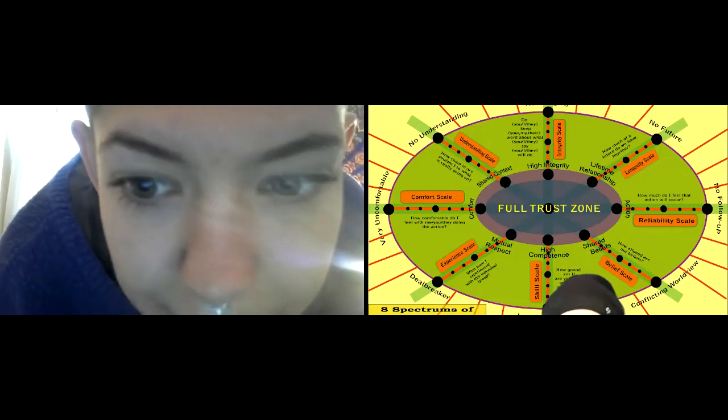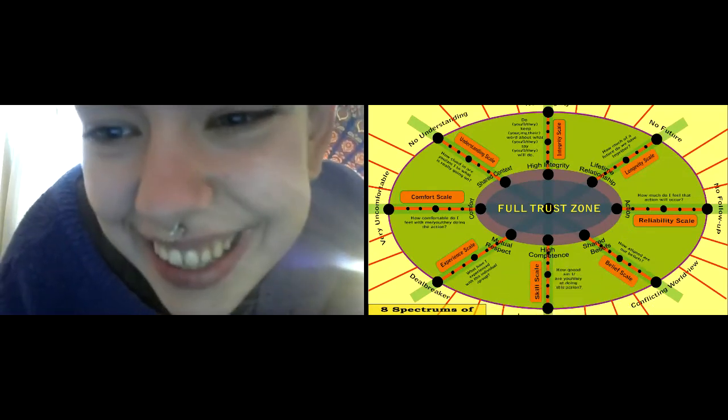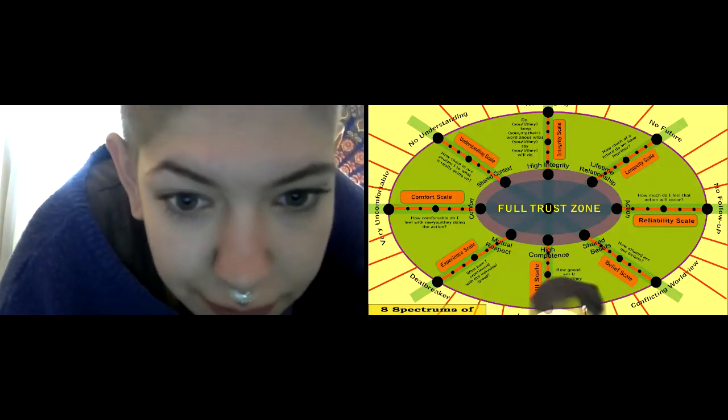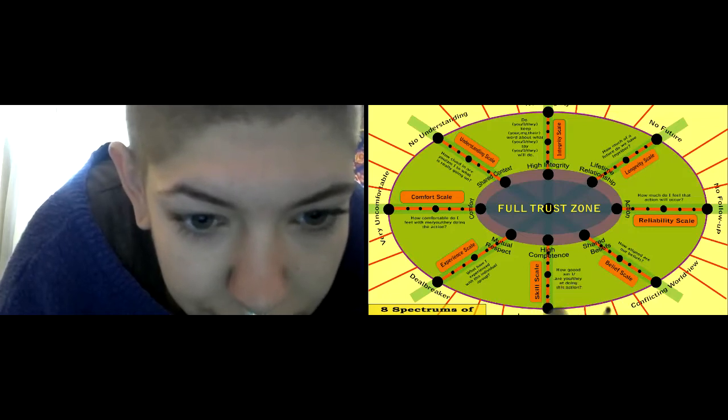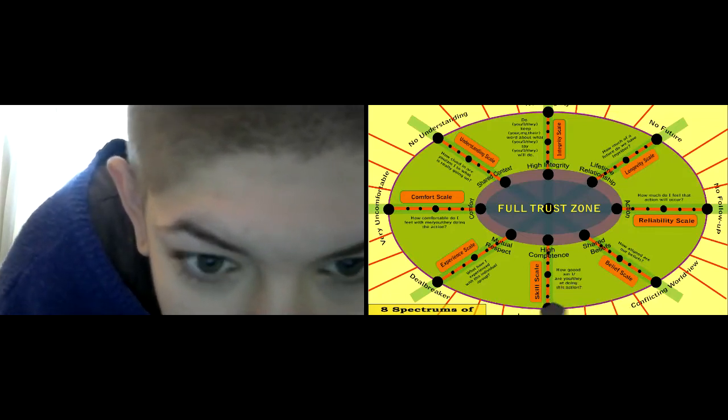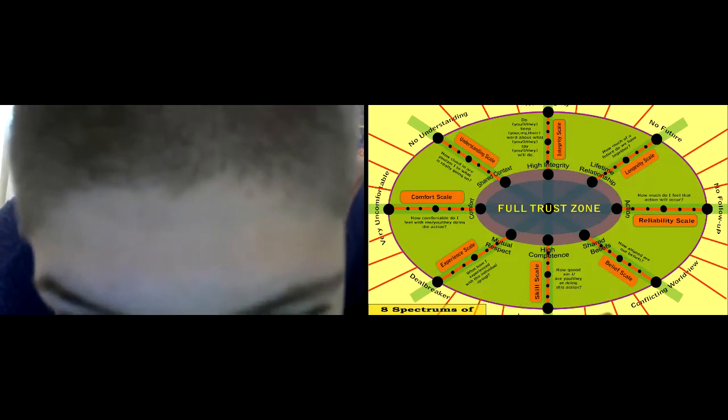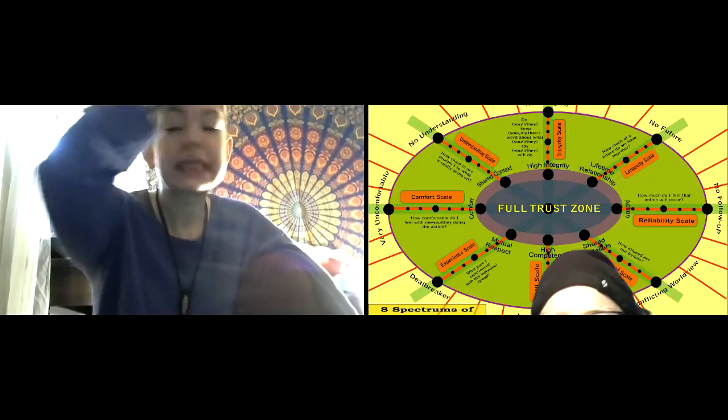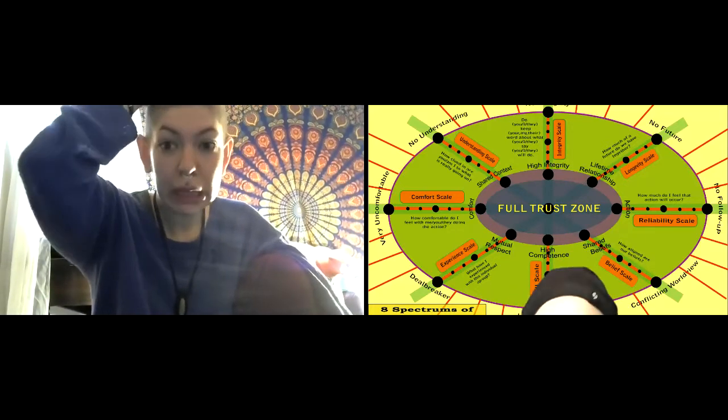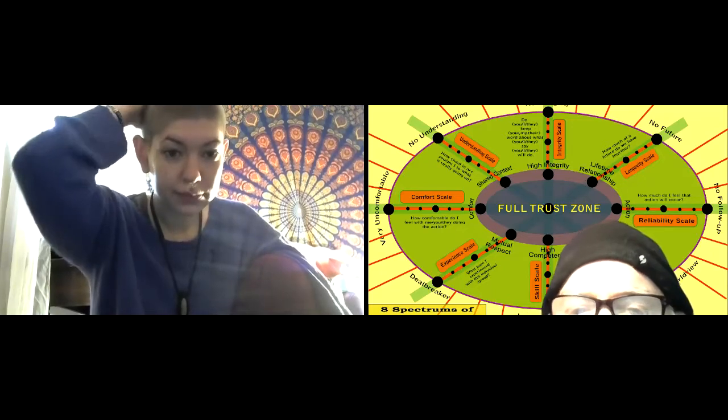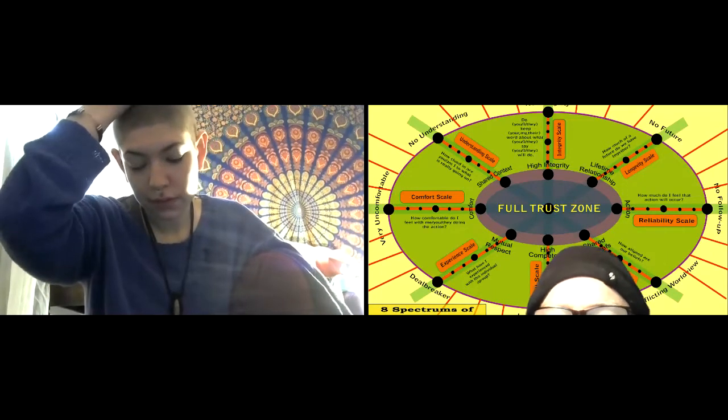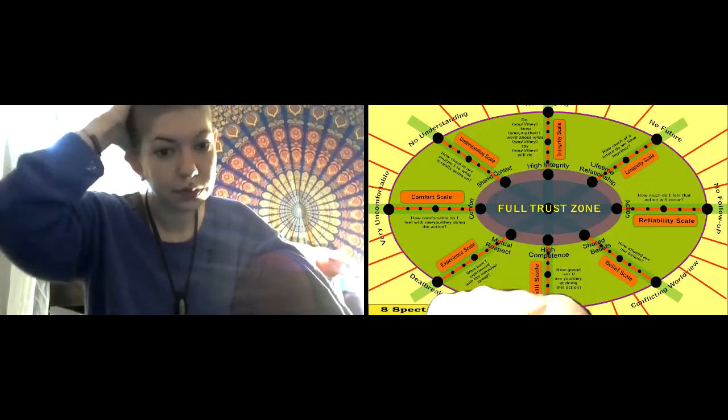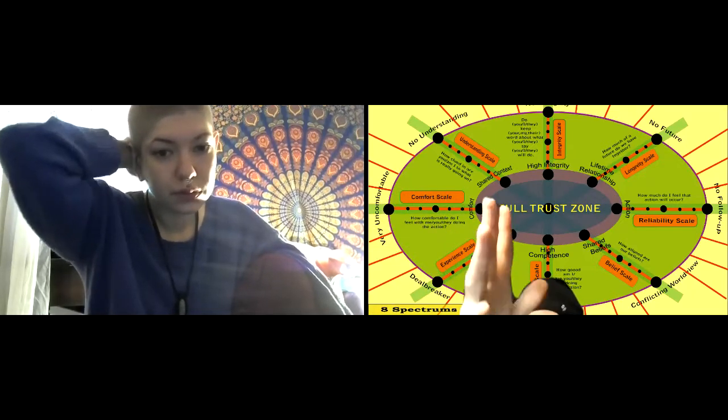Reliability scale - are they very reliable or no follow-up? Belief scale - you got shared beliefs versus conflicting worldviews. Skill scale - highly competent versus very low competence. Experience - do you have mutual respect or did they do a deal breaker? Comfort scale - very uncomfortable versus comfortable. Understanding scale - shared context or no understanding. Each of these is a spectrum that people can use to see how much they trust somebody.